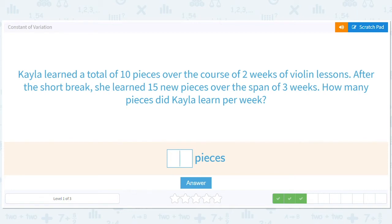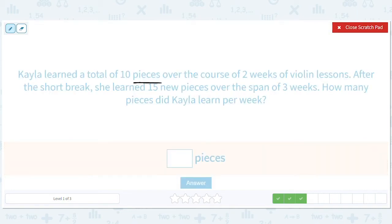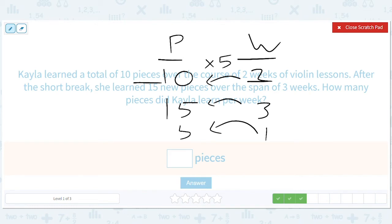So we have pieces, weeks. So pieces, weeks. We have 10 pieces over two weeks. We have 15 pieces over the span of three. Can you see the pattern? What are we multiplying by? You guessed it, times five. So how many pieces did Kayla learn per week? So if this is one week, then we multiply by five and we get five pieces.